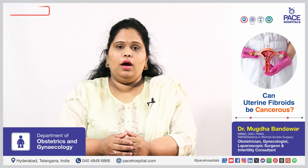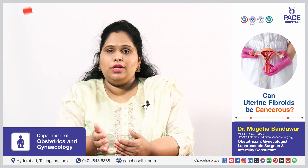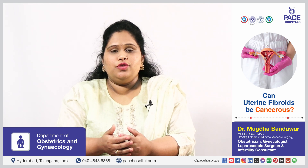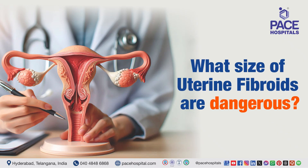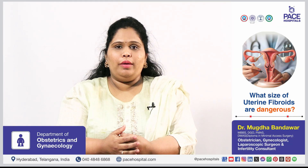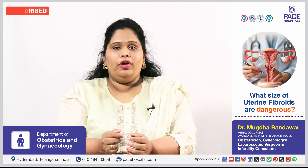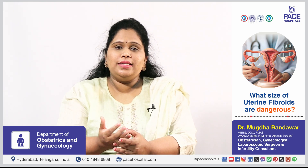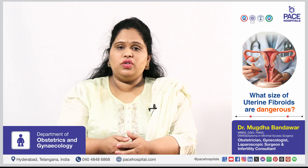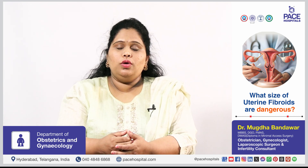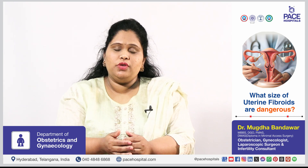Long-standing uterine fibroids which have undergone degeneration — like cystic degeneration in postmenopausal women — might convert into a cancerous form, but it is a rare phenomenon. The size of the uterine fibroid doesn't actually matter; it is the symptoms and the type of fibroid which is present that matter. For example, a 6 cm fibroid can be non-symptomatic, while even a 2 cm fibroid growing inside the cavity of the uterus leading to multiple abortions is dangerous. So the size doesn't matter — it is the symptoms and the location which actually matter.